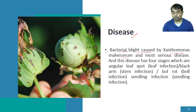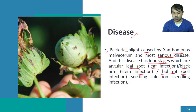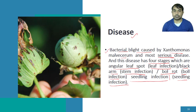This is the most serious disease, and it has been found in four stages. The angular leaf spot is called leaf infection. The four stages in bacterial leaf blight are: leaf infection, ball infection, and seedling stage of infection.